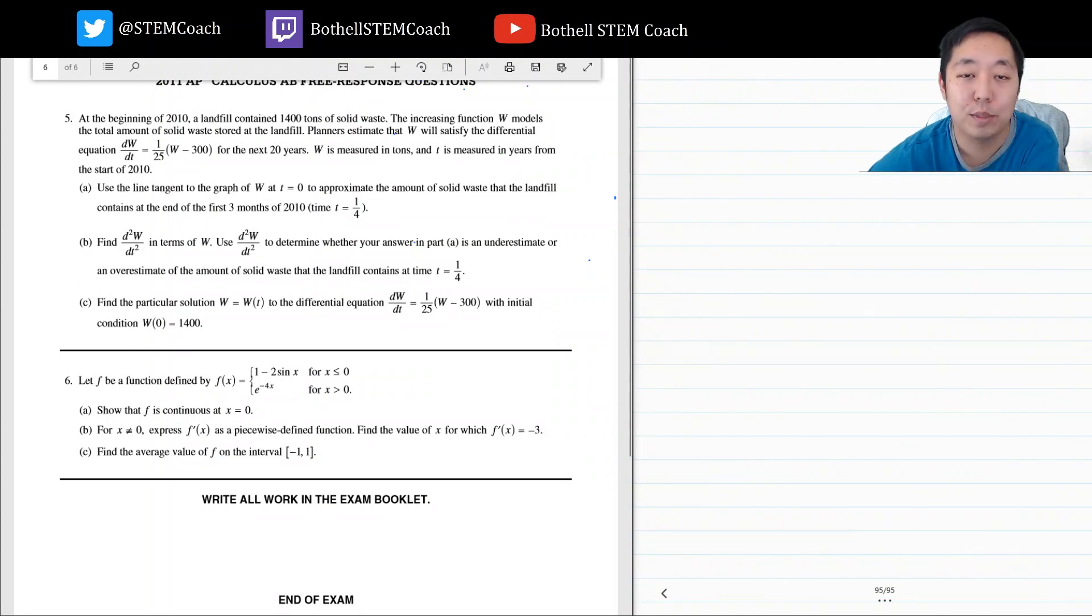Hey guys, this is Alan with Bothell STEM Coach and we are continuing on with the 2011 AP Calculus AB exam. Looks like they put five and six on the same page, but I'll still split it out into a couple videos just so it's easier to organize. As people are studying, you can look up the specific question that you want to do. So here we'll do number five.